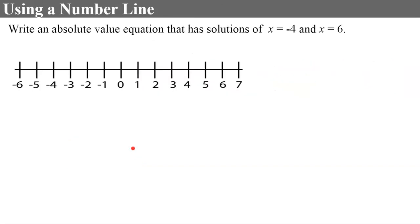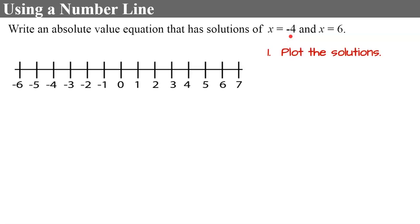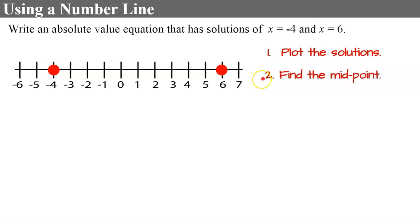Now we're going to do one where the solutions are not opposites. We're being asked to write the equation and I strongly encourage you to use a number line as a visual. The first thing I'm going to do is plot the solutions. We've been given that the solutions are negative 4 and 6, so let's plot those. The next thing I want to do is find the midpoint between the solutions, which is 1.